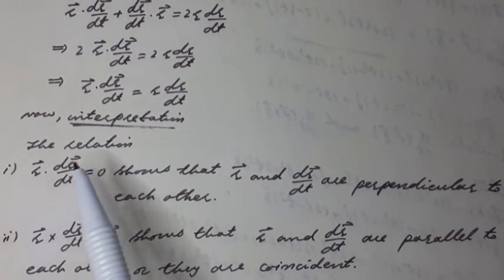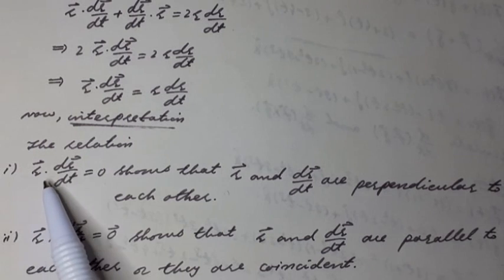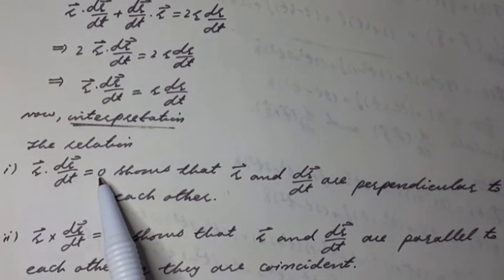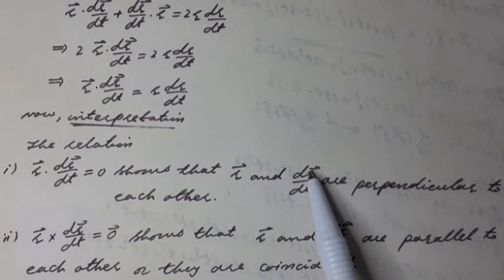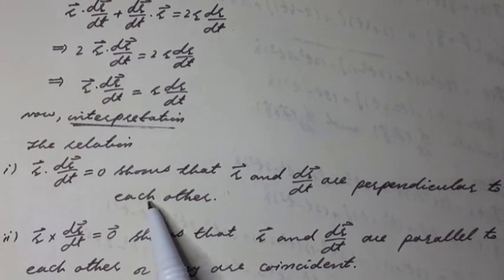Now interpretation. The relation R vector dot dR vector over dt is equal to 0 shows that R vector and dR vector over dt are perpendicular to each other.